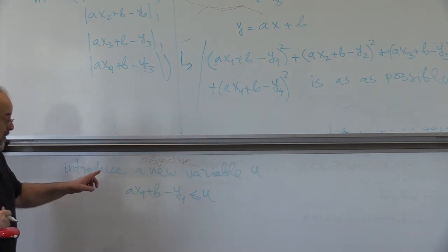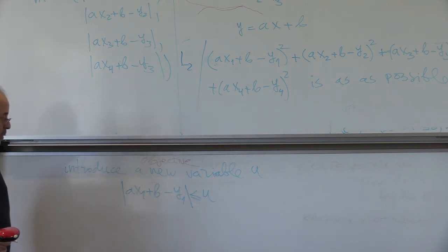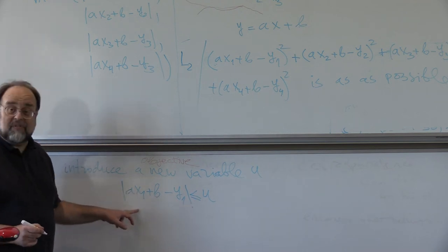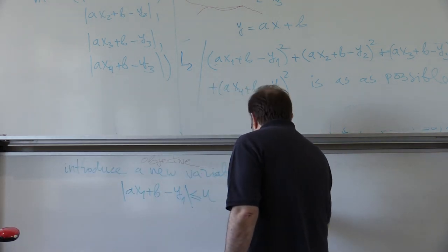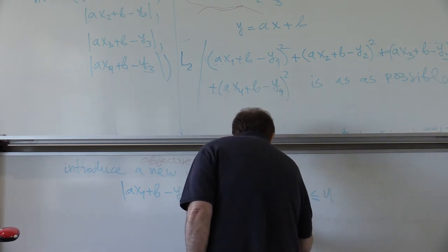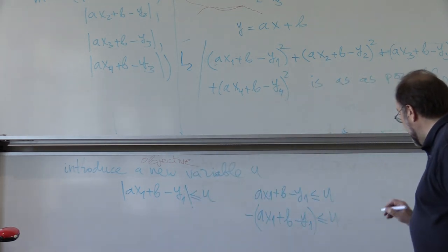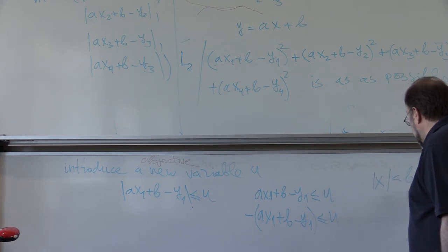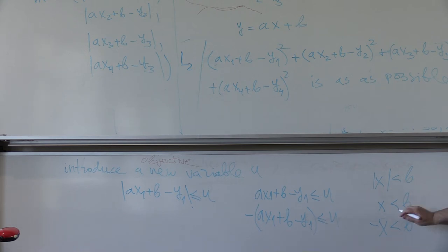But this is not a linear constraint because of the absolute value. But this can be broken into two linear constraints. Namely, a x1 plus b minus y1 is smaller or equal than u. But also, minus a x1 plus b minus y1 is also smaller or equal than u. Because we have absolute value of x is smaller than some b if and only if x is smaller than b and also, minus x is smaller than b. This is equivalent to that.